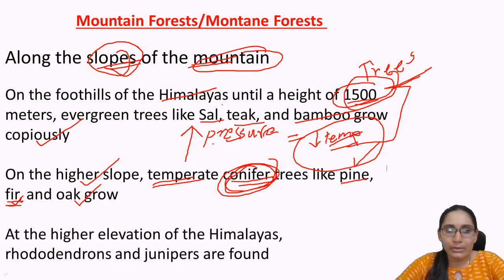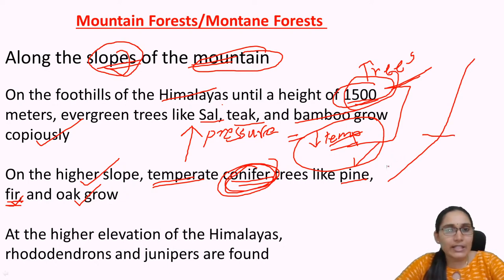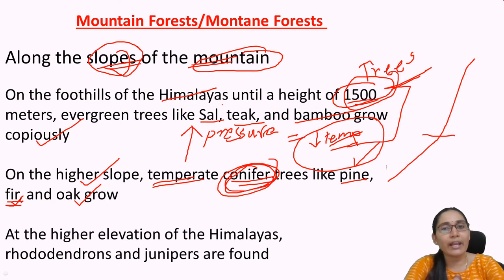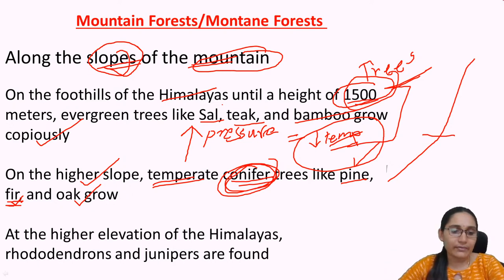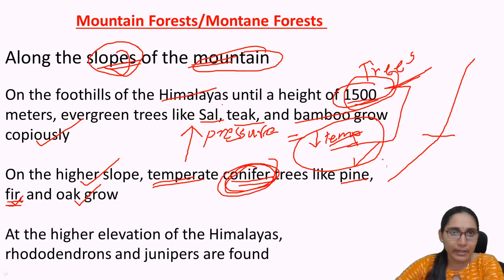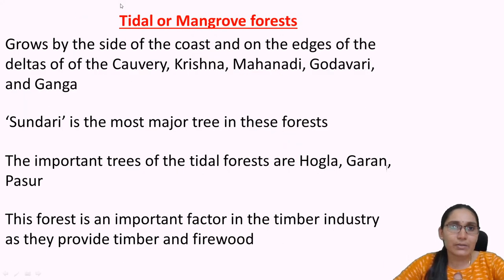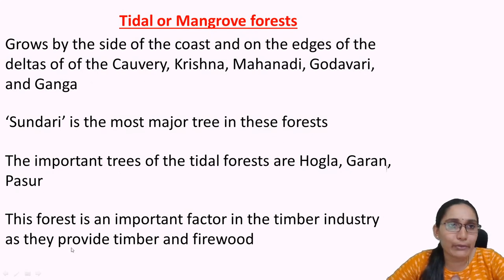So until 1500 meters height we see evergreen trees like sal, teak, and bamboo. At higher elevations of the Himalayas, rhododendrons and junipers are found. As we move further upwards we see temperate forest or temperate vegetation. This is about mountain forest.